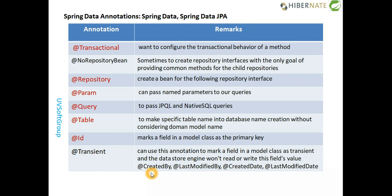@Id is the primary key annotation from Hibernate or JPA. @Transient means a field will not be stored, saved, or deleted at the database level — you annotate it as transient so that field doesn't participate in any read/write operations in your backend database models.